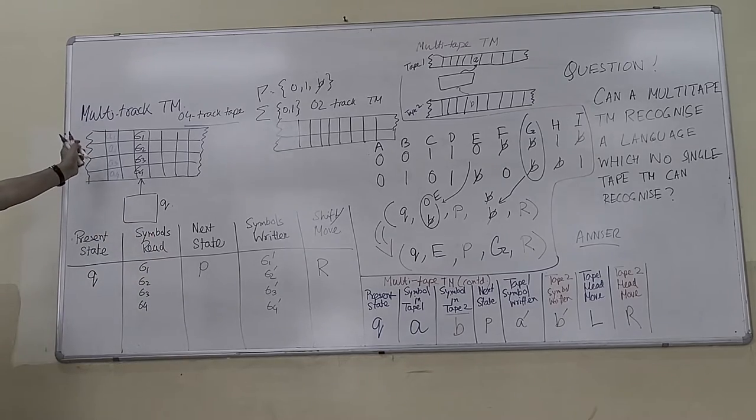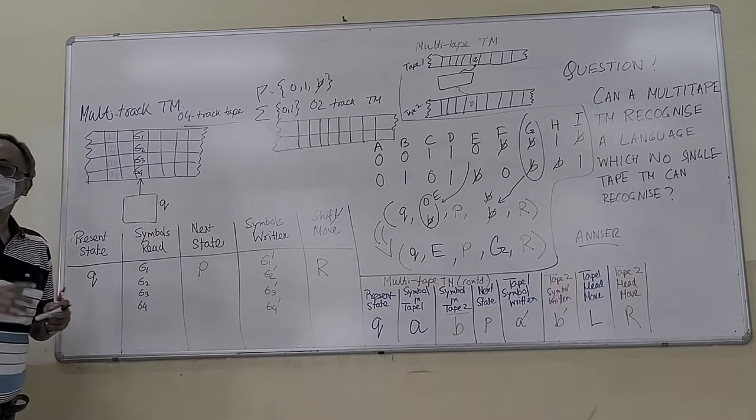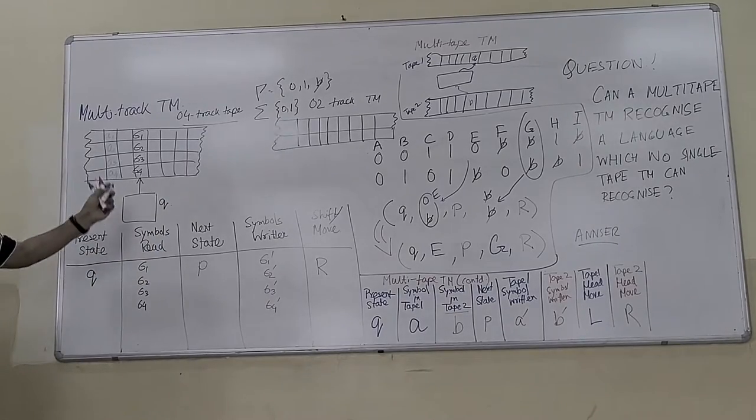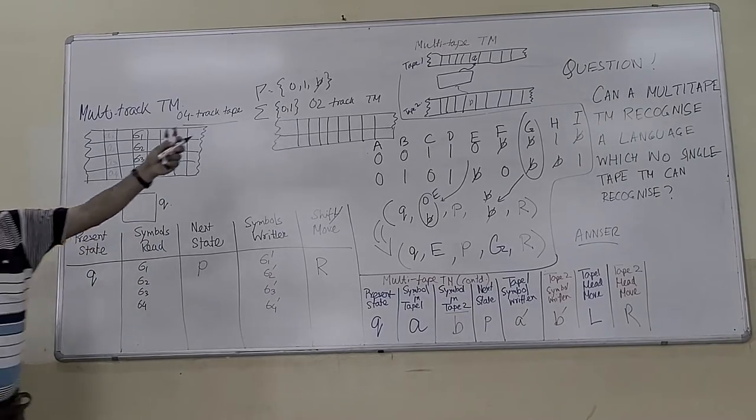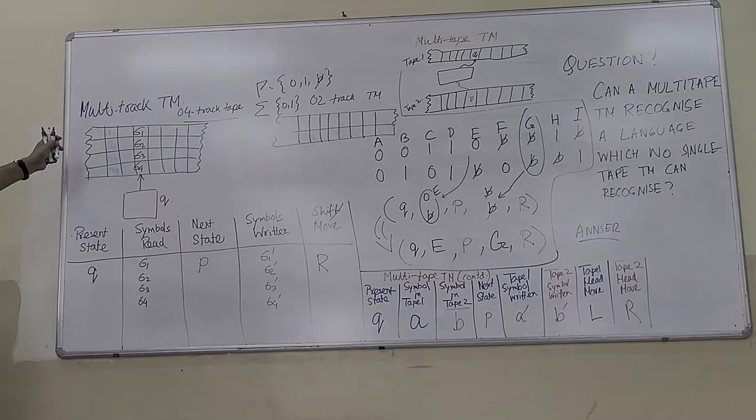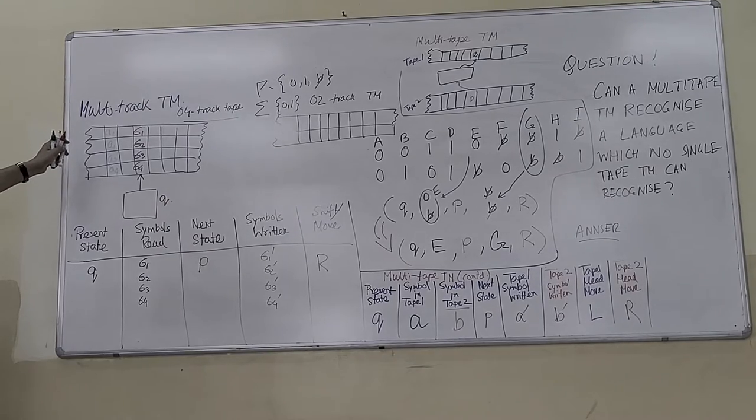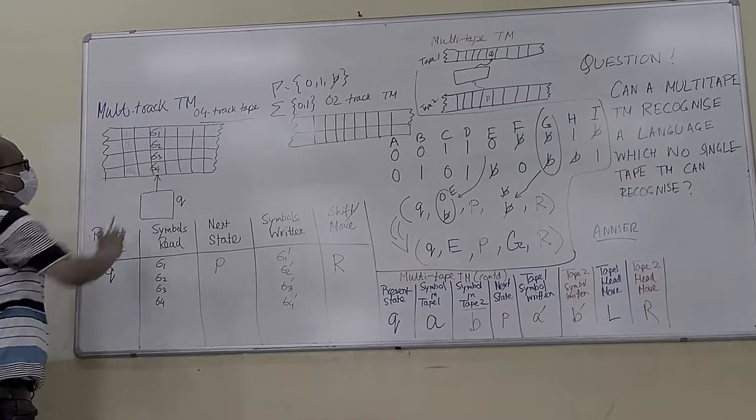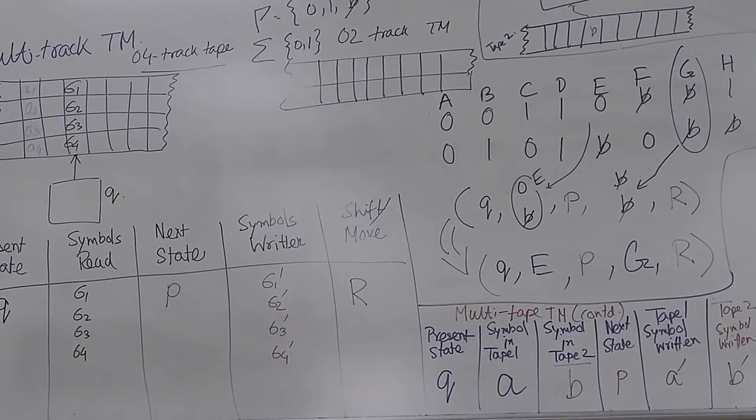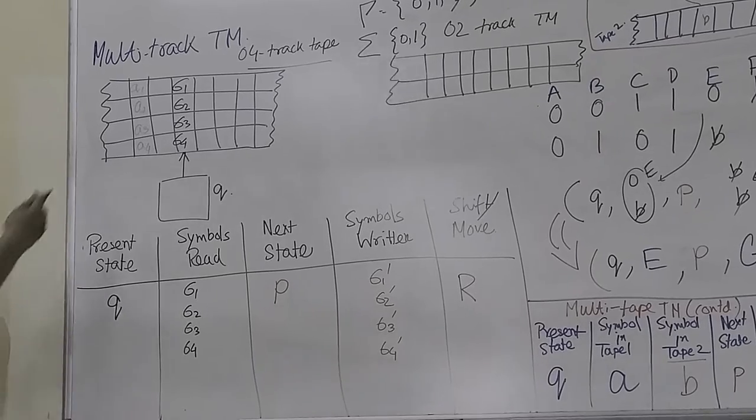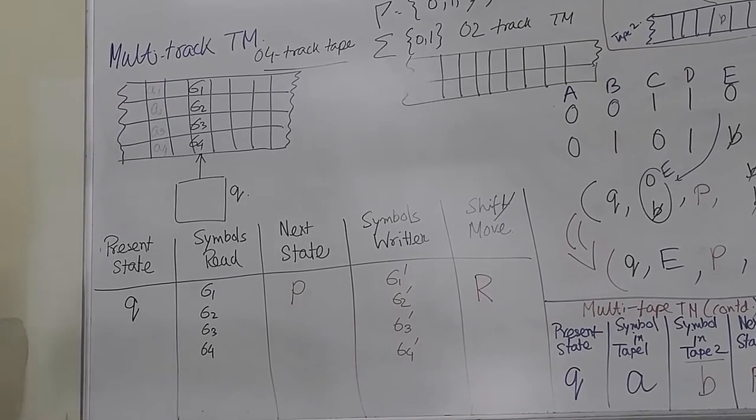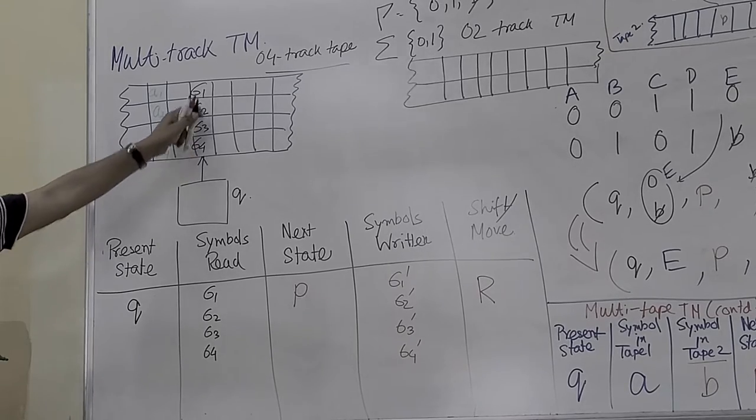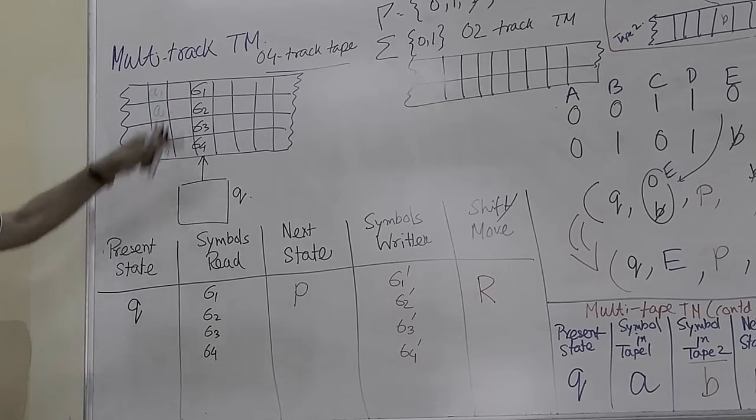Going for the multi-track Turing machine that I covered last year also. We will continue from multi-track Turing machine. Starting with the multi-track Turing machine, there is a distinct term. Multi-track means one track, I have four tracks. And there, the symbols are A1, A3, A4, and it is another pair of quad symbols.